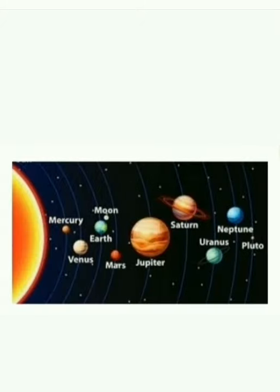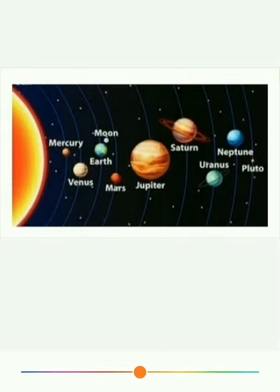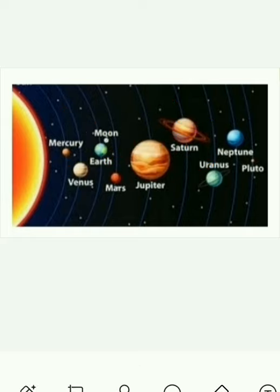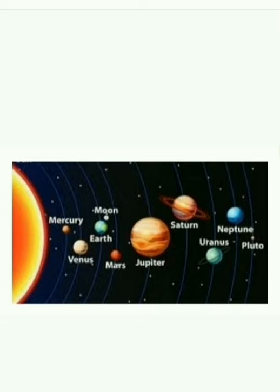In the next picture, the Earth takes 365.25 days or 365 and 1/4 days to complete one revolution. Earth takes 365 and 1/4 days to complete one revolution. This is called a year. The day and year are a result of the Earth's movement.